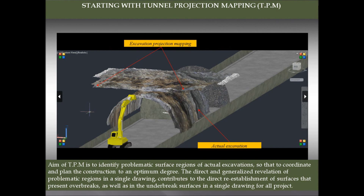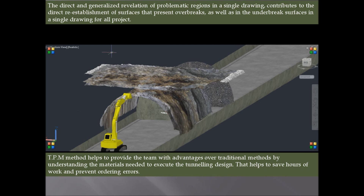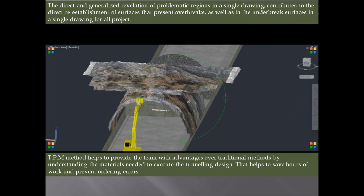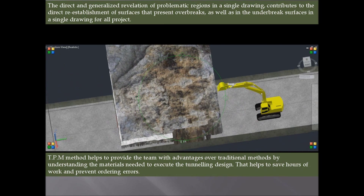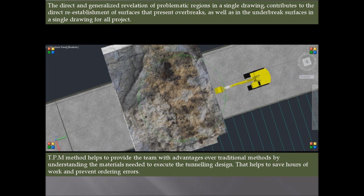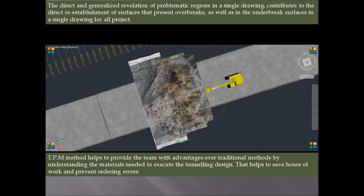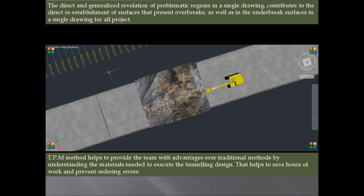We introduce the main core of the method by starting with the so-called TPM — Tunnel Projection Mapping. The aim of TPM is to identify problematic surface regions of actual excavations so as to coordinate and plan the construction to an optimum degree. The direct revelation of problematic regions in a single drawing contributes to the reestablishment of surfaces that present overbreaks, as well as underbreak surfaces, across the entire project. TPM helps the team understand the materials needed to execute the tunneling design, saving hours of working procedures and preventing ordering errors.